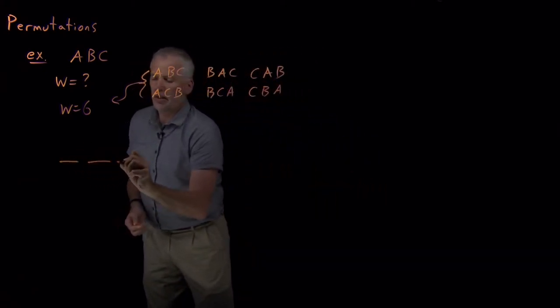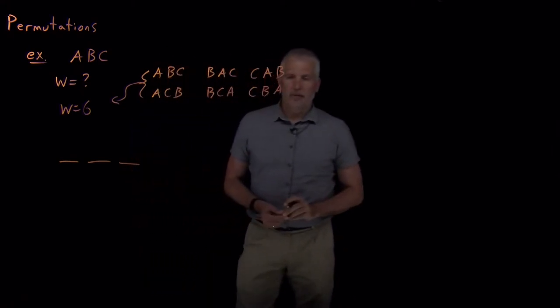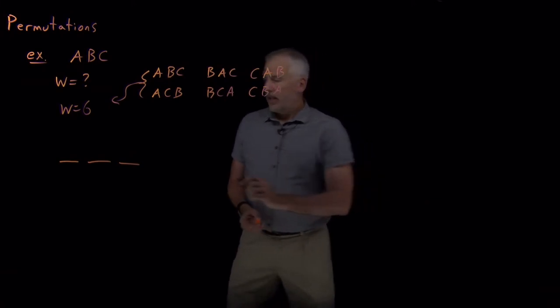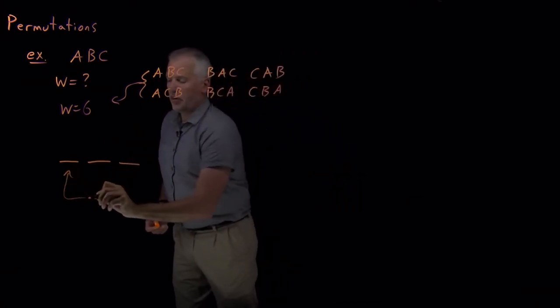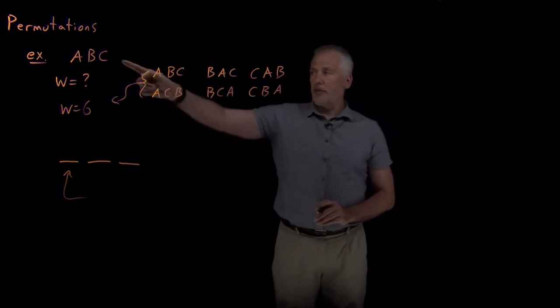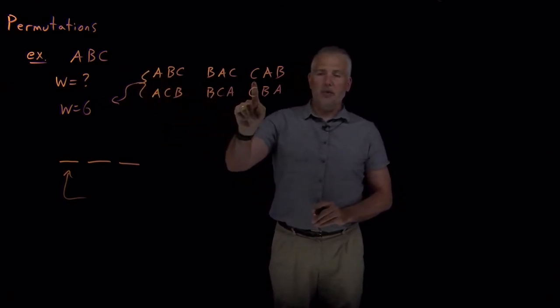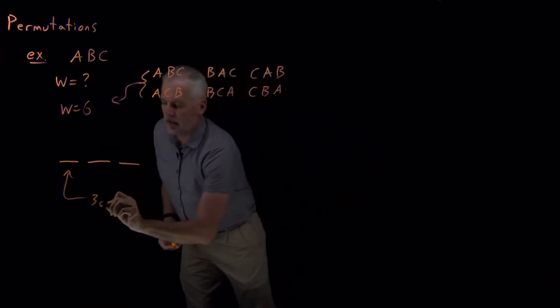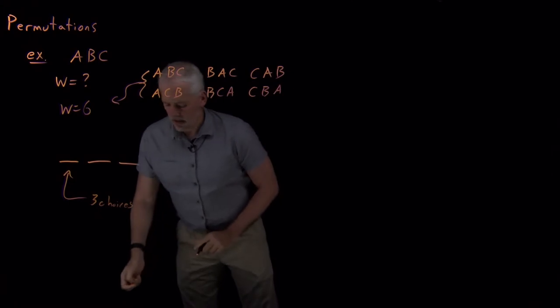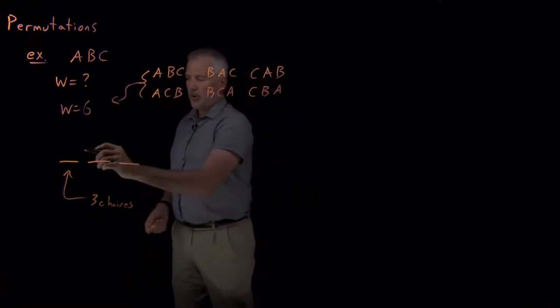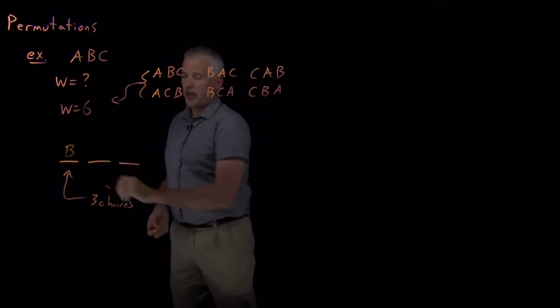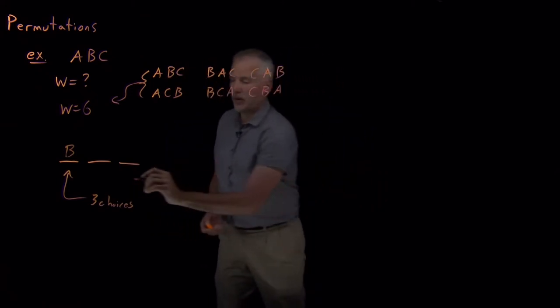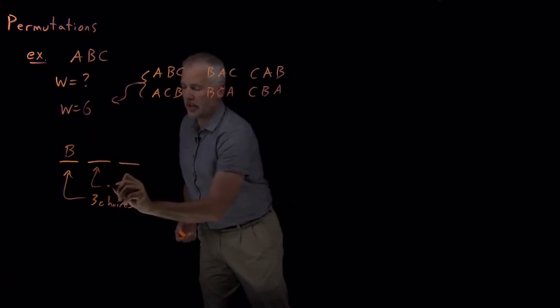We need to know a way of calculating this number of permutations without writing all the possibilities down. To do that, we'll think about the problem this way. We have three letters. They have to go in three spots: first letter, second letter, third letter. When I started writing down possibilities, there were only three choices for what I could have put in the first slot.